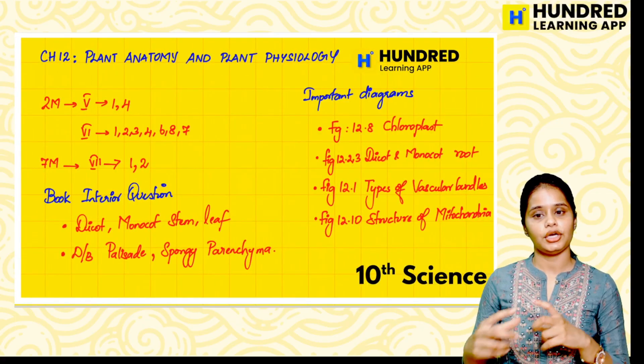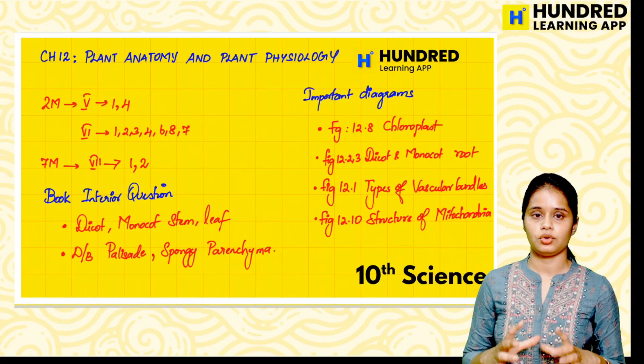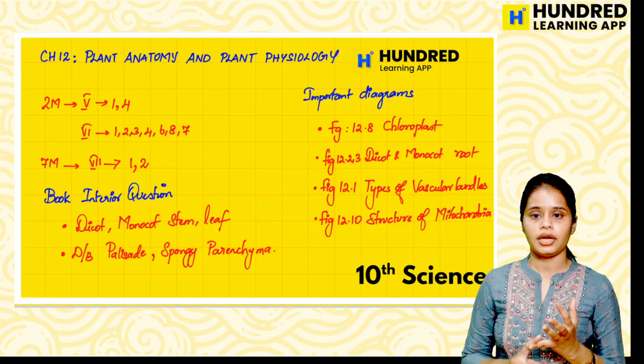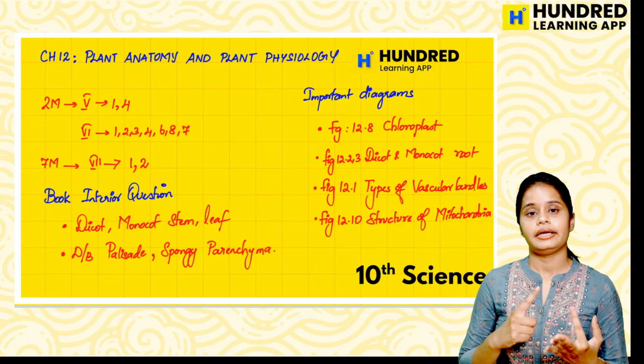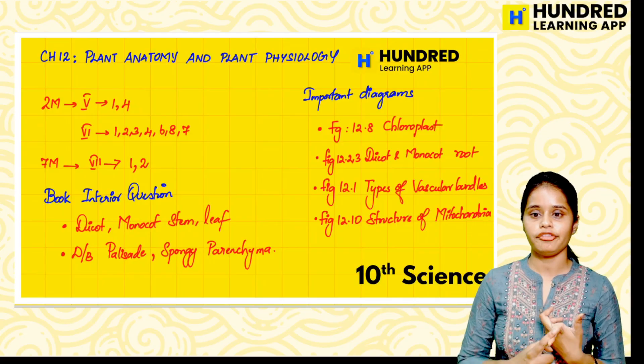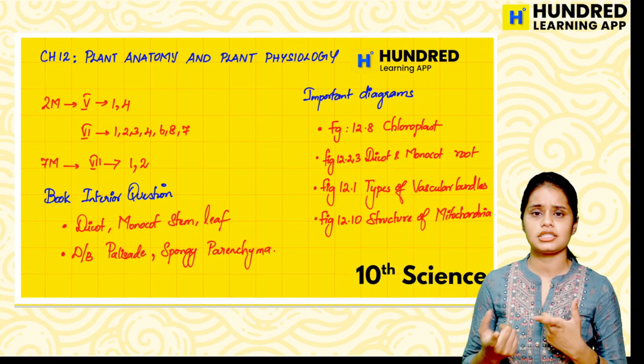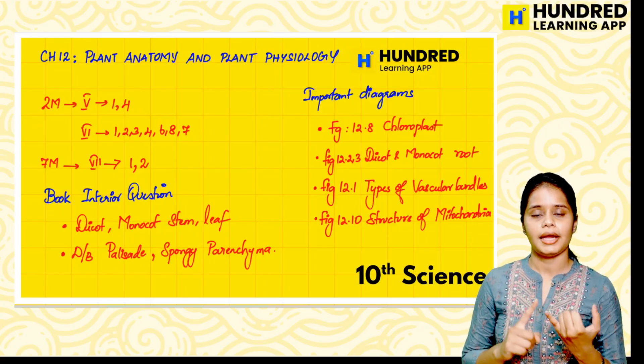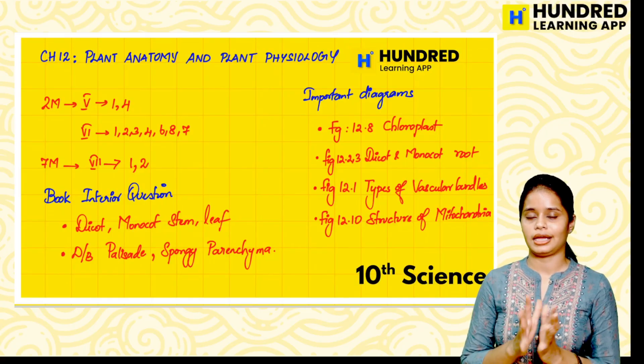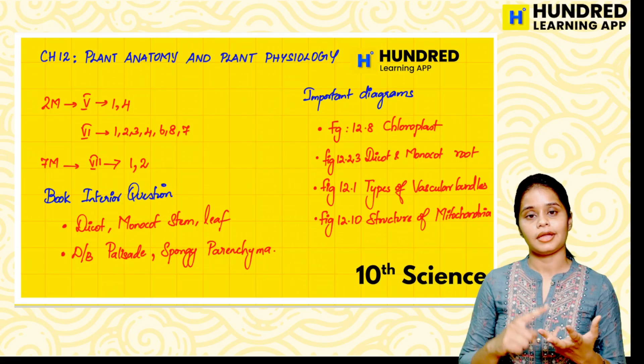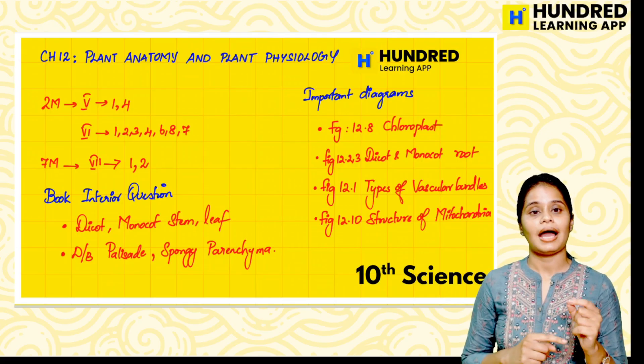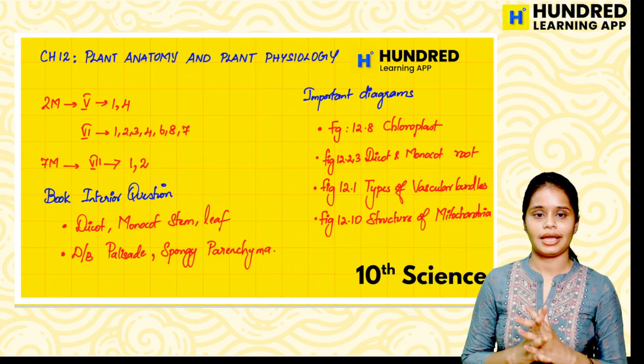And Biology - important diagrams. We will take a screenshot here. Important diagrams: Chloroplast, dicot and monocot Root, types of vascular bundles, Structure of Mitochondria. Mitochondria and chloroplast are very important. And that is a book interior question - Dicot stem, monocot stem, Dicot leaf, monocot leaf, and palisade and spongy parenchyma.